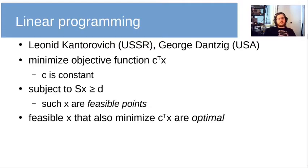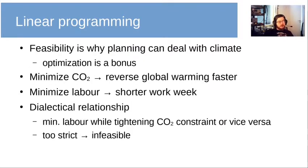The tool for dealing with these kinds of systems is linear programming, invented in parallel by Leonid Kantorovich in the USSR and George Dantzig in the USA. In linear programming you minimize an objective function, which is a linear combination of the variables in x — shown as a scalar product between a constant vector c and x — subject to the constraints mentioned earlier. Any x that does not violate any constraint is called a feasible point, and if it also minimizes the objective function it is an optimal point.